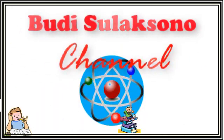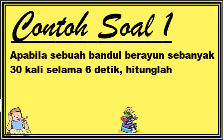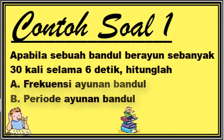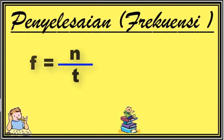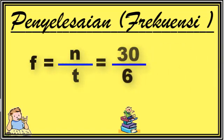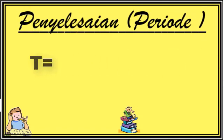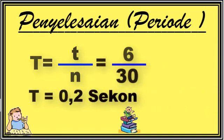Agar dapat lebih memahami persamaan matematis yang telah kita uraikan tadi, mari kita simak contoh soal berikut ini. Apabila sebuah bandul berayun sebanyak 30 kali selama 6 detik, hitunglah: A. Frekuensi ayunan bandul, dan B. Periode ayunan bandul. Penyelesaian: Frekuensi = N/t = 30/6, sehingga frekuensi diperoleh 5 Hz. Periode = t/N, di mana t adalah waktu ayun dan N adalah jumlah ayunan. T = 6/30, sehingga diperoleh nilai periode = 0,2 sekon.